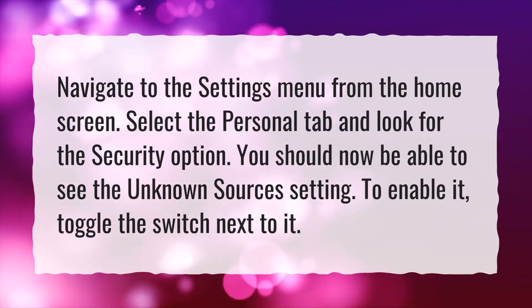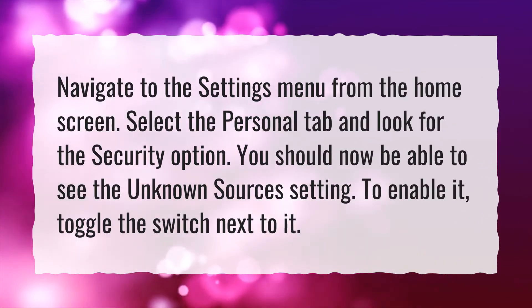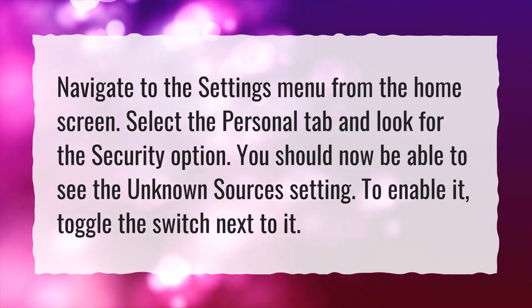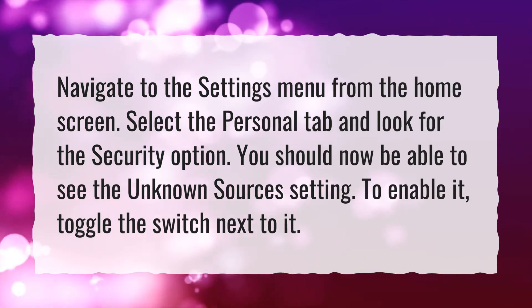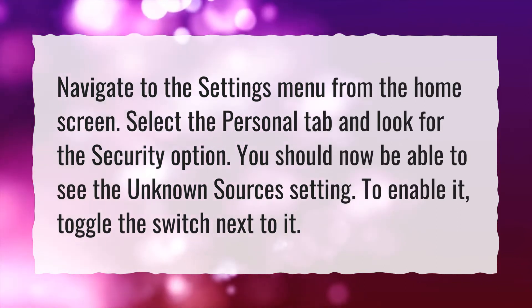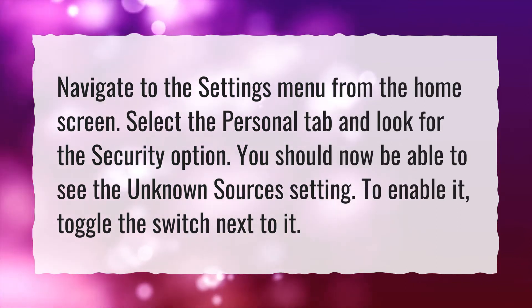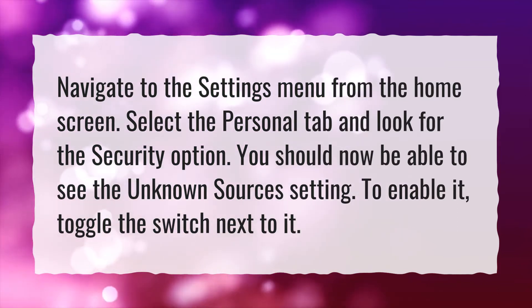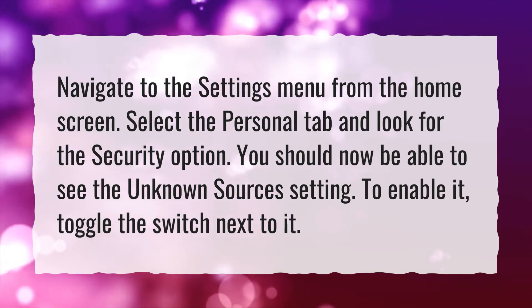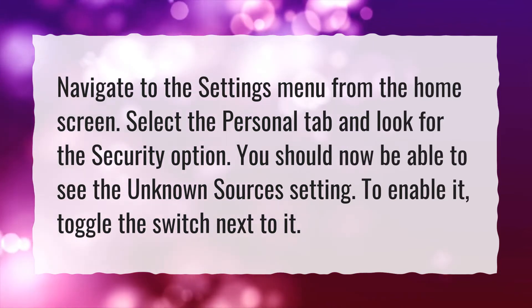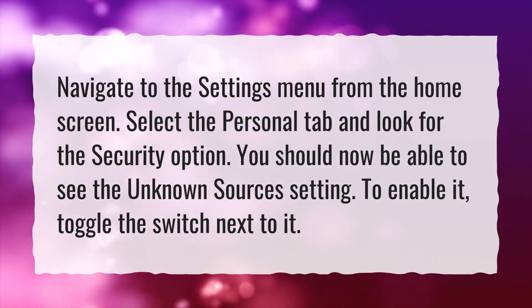Navigate to the settings menu from the home screen. Select the personal tab and look for the security option. You should now be able to see the unknown sources setting. To enable it, toggle the switch next to it.